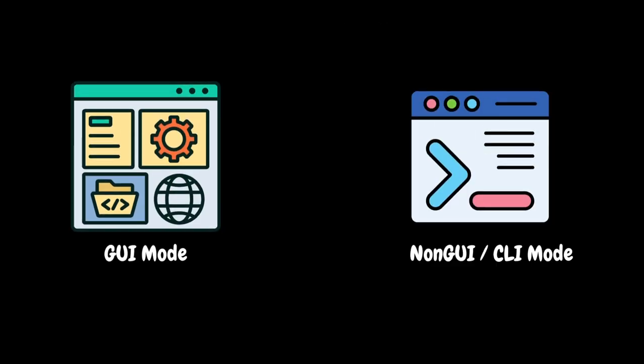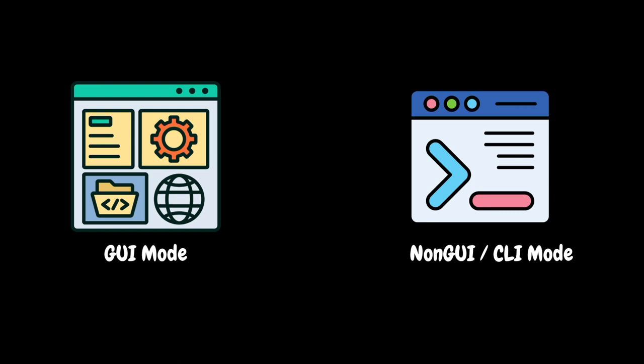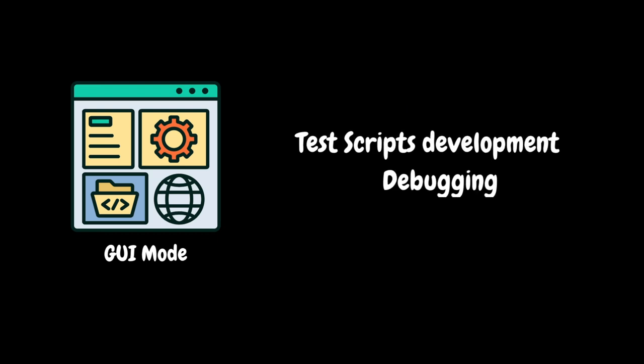In JMeter, we can execute tests in two modes: GUI mode and non-GUI mode, or CLI mode. What is GUI mode? GUI stands for graphical user interface.